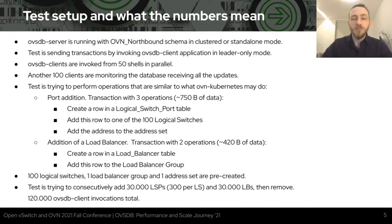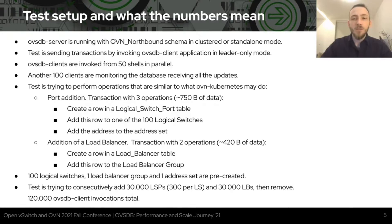This means that we will have at most 50 parallel transactions at any time. Another hundred clients are monitoring the database receiving all the updates. The test is trying to send transactions similar to what OVN Kubernetes might do — simulating the addition of a port and the creation of load balancers. 100 logical switches, one load balancer group, and other objects are created beforehand. The test consequently adds 30,000 ports and 30,000 load balancers and then removes all of them, for a total of 120,000 OVSDB client invocations.